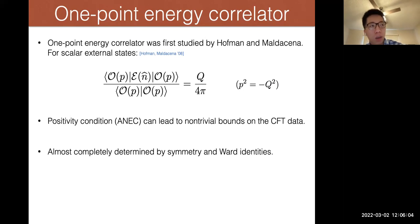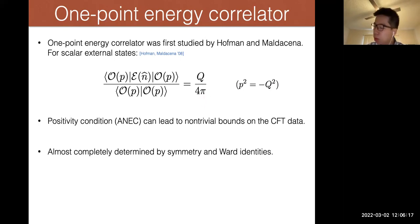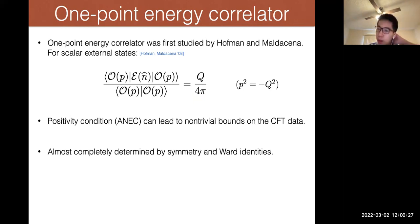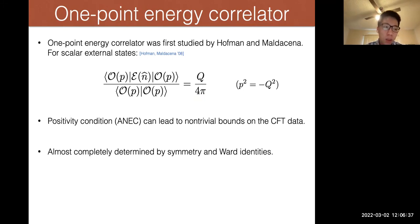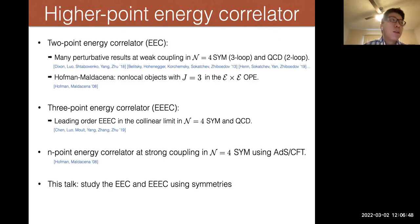The one-point energy correlator was studied by Hofman and Maldacena in their famous paper on conformal collider physics. For scalar states it's just a constant. They also found all these interesting conformal collider bounds using the condition that energy detectors are positive semi-definite. From the point of calculating the one-point energy correlator, it's almost completely fixed by symmetry and Ward identities. Even in a general CFT it's pretty well understood, but for higher points the situation is different — it becomes much harder to calculate them.